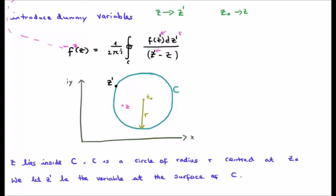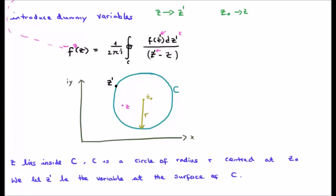z lies inside the circle C, which is a circle of radius r centered at the pole z_0. We let z prime be a variable at the surface of C. Rather than setting up a separate circle c prime and applying the Cauchy integral formula along that, we consider the circle C and use the variable z prime on that. It will allow us, as we shrink down towards z, to get at z_0.